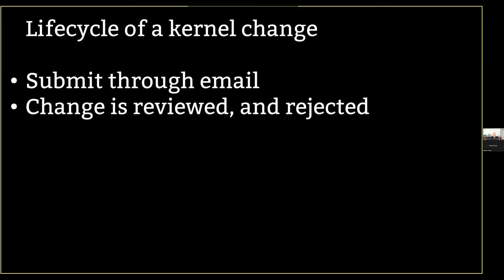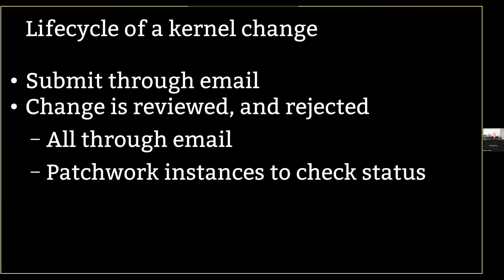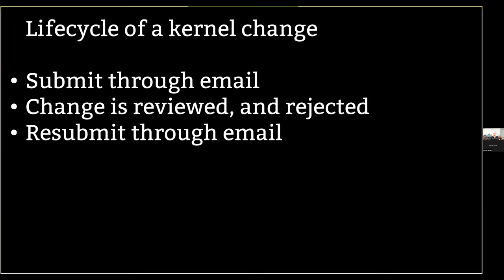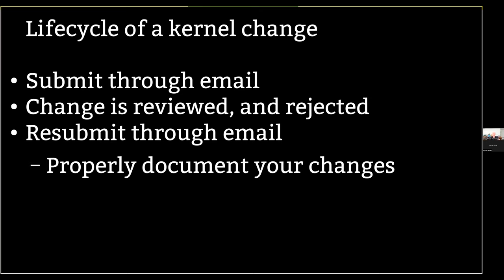We review everything in public on the mailing list, and we usually reject it — most changes are rejected. You can also see the status of things through patch tools we have for some subsystems. A patch takes at least three times to get through because you're going to have to resubmit it based on the review. When you resubmit through email, you document what changed from the previous version, because some maintainers like me get 1,000 emails a day. The networking people get a ton of patches. You need to say what changed from the previous version — that was 200 patches ago. Our tools show this as well.